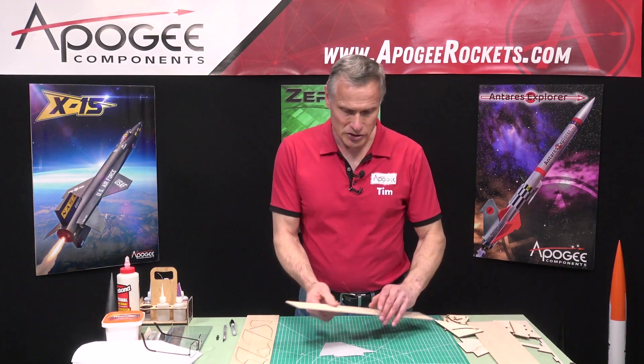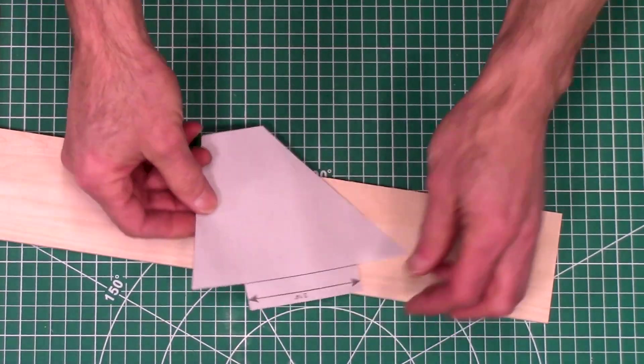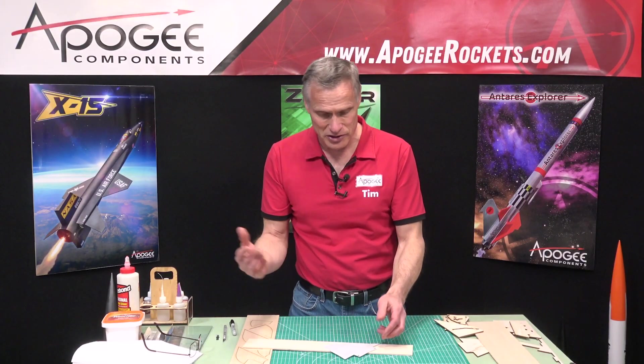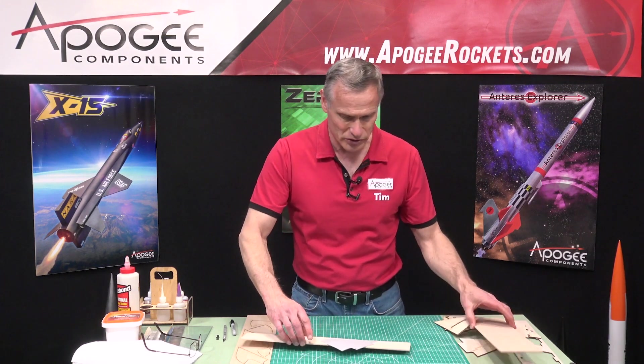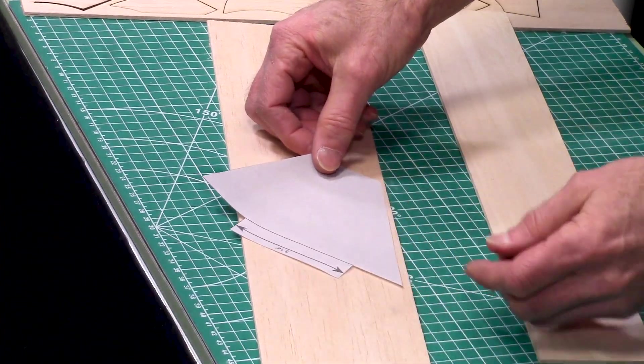But then you go to cut it out of a piece of wood and you discover that this fin is too large for the wood. So your obvious thing is, well, get a piece of bigger wood. So here's a four inch wide piece of wood, and it's still too big.